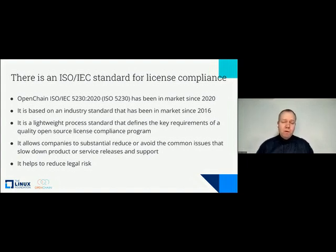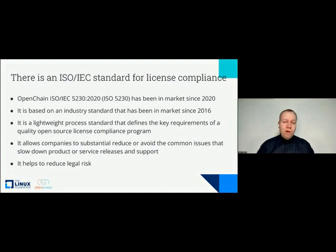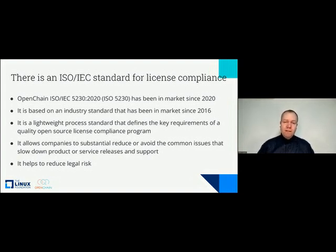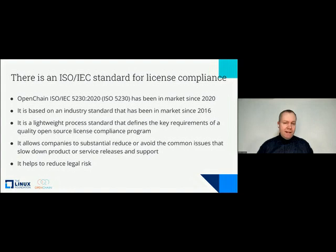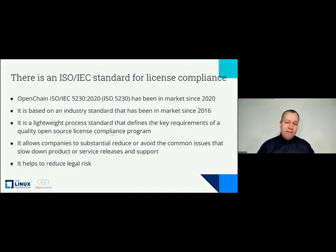There are many ways to approach license compliance. One way is to have very long checklists. We went in the opposite direction and created a process standard that helps people understand the key things they need to do to manage open source license compliance. ISO 5230 is a light process standard defining the key requirements of a quality open source license compliance program.